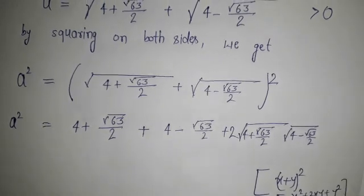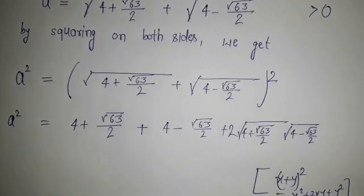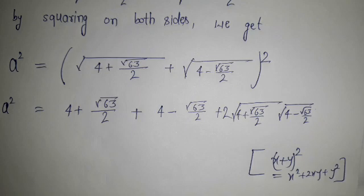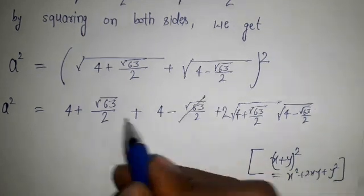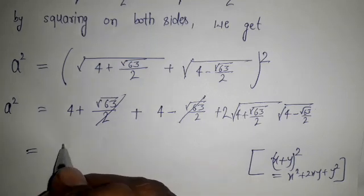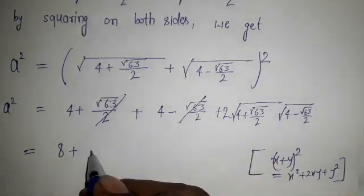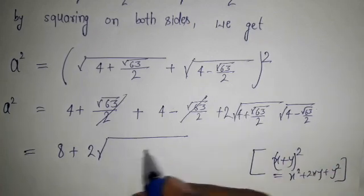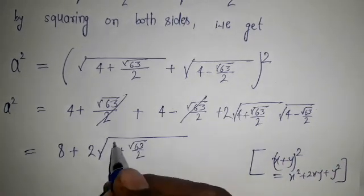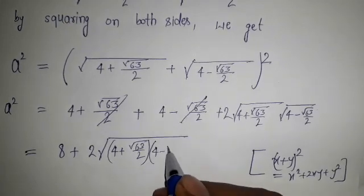So we are canceling here. 4 plus 4, that is 8. And here 2, and these are having both roots, so this will be under the same root. So 4 minus square root 63 by 2.